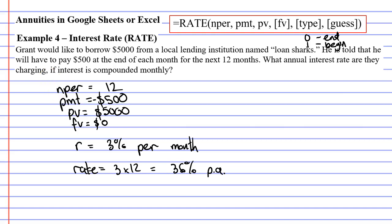So we can see that the loan sharks are ripping off Grant, they're charging him 36% per annum, which is an extremely high interest rate. And you've got to be very careful with this because there are institutions out there that charge extremely high interest rates, and you need to figure out what the interest rate is before you borrow money from institutions like this.